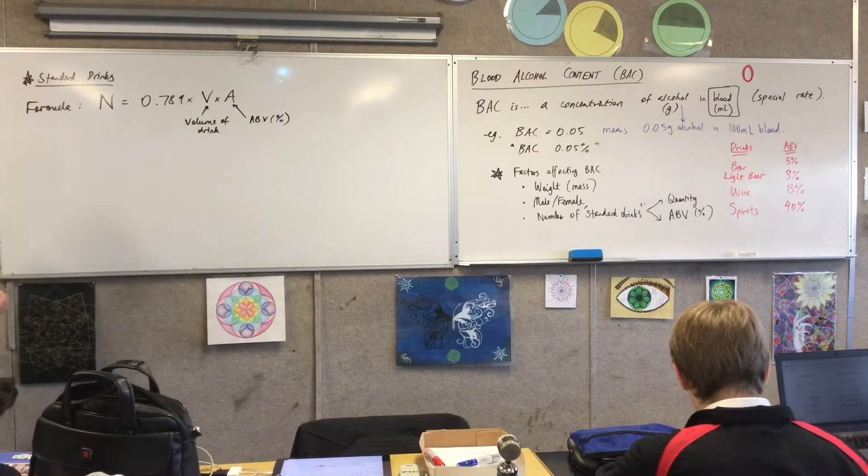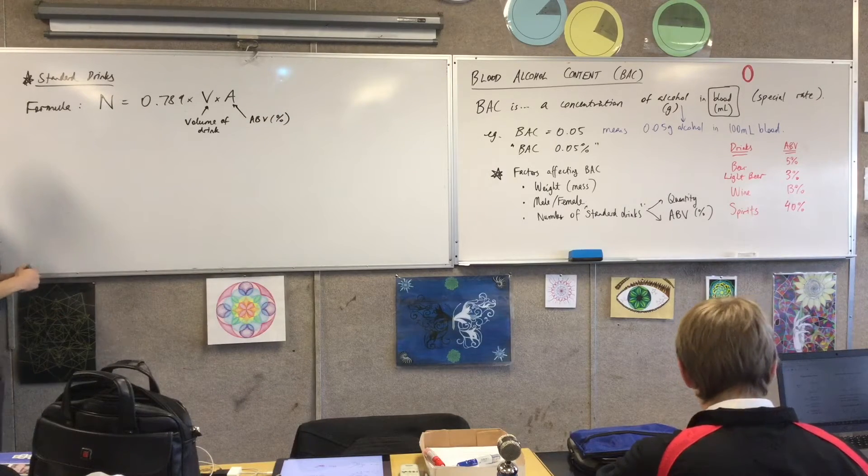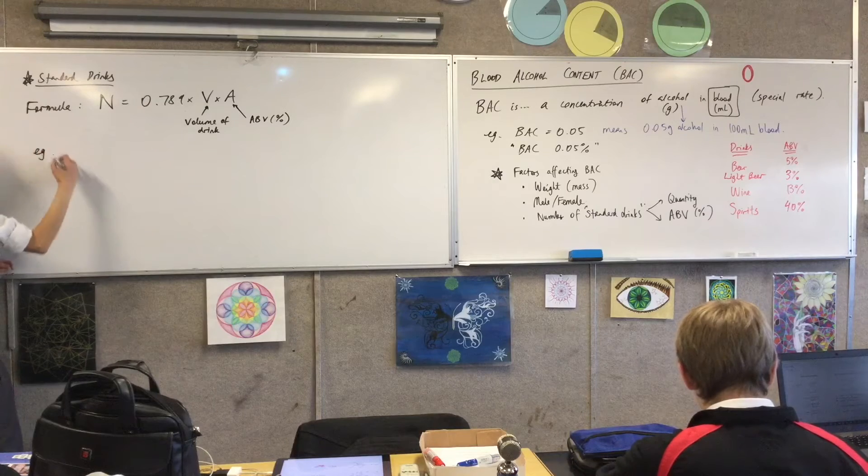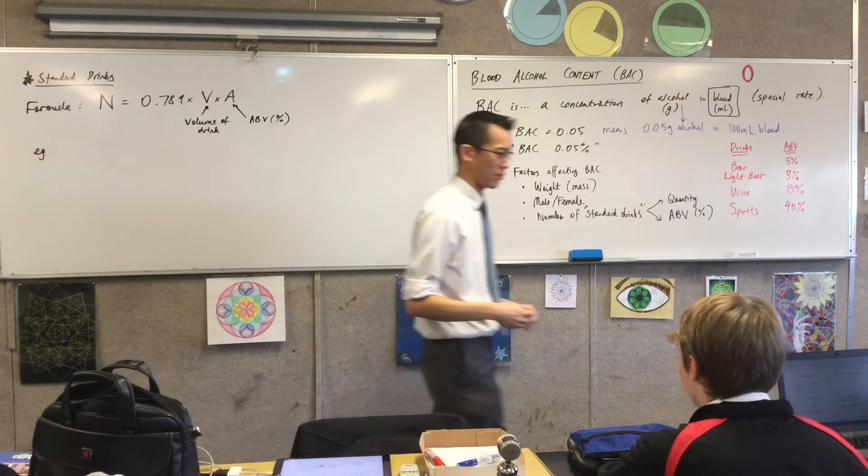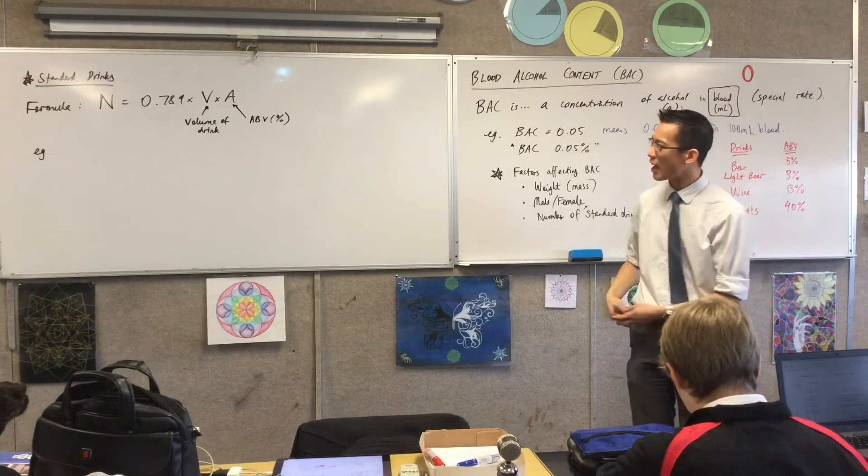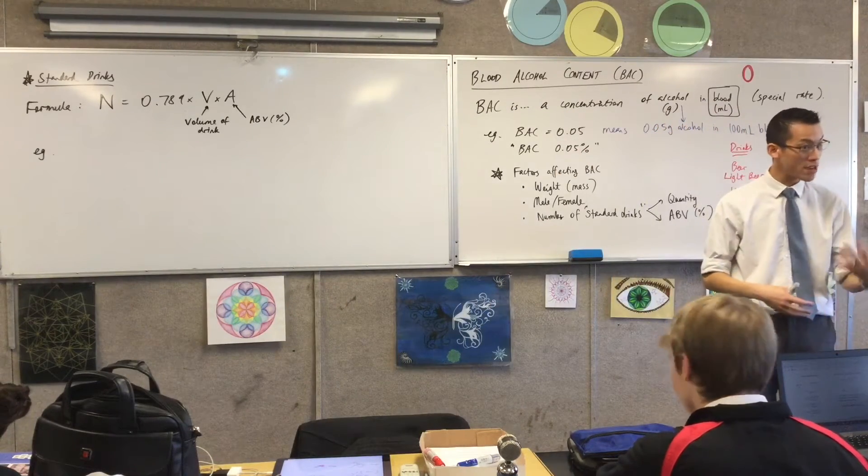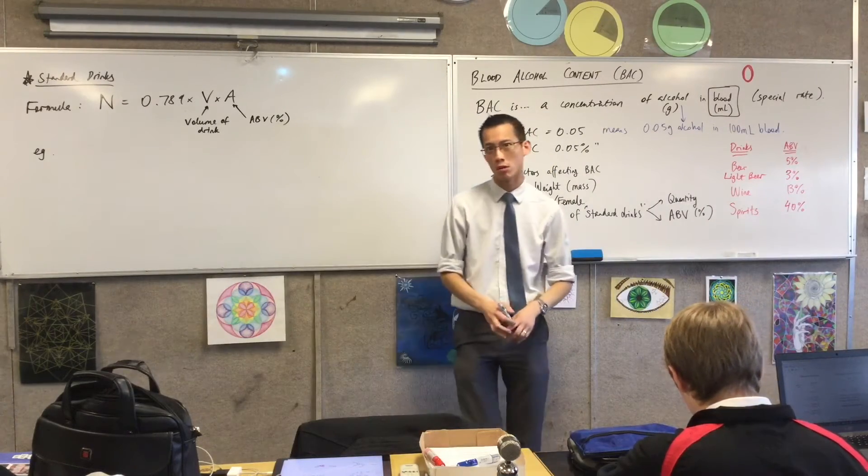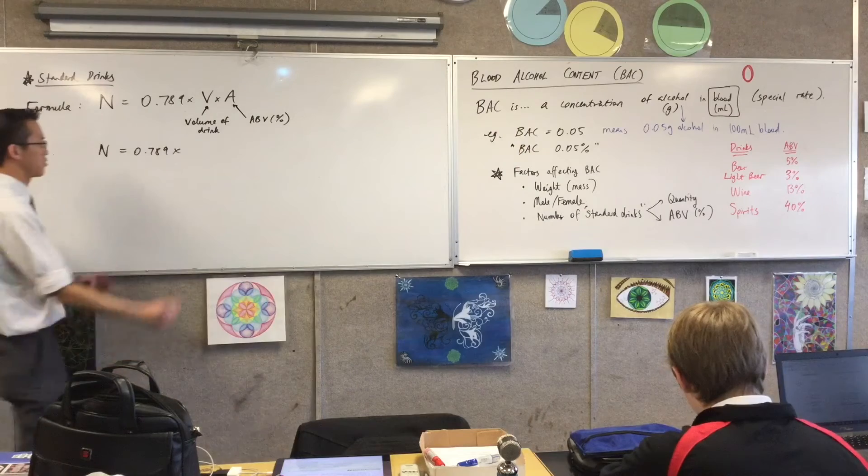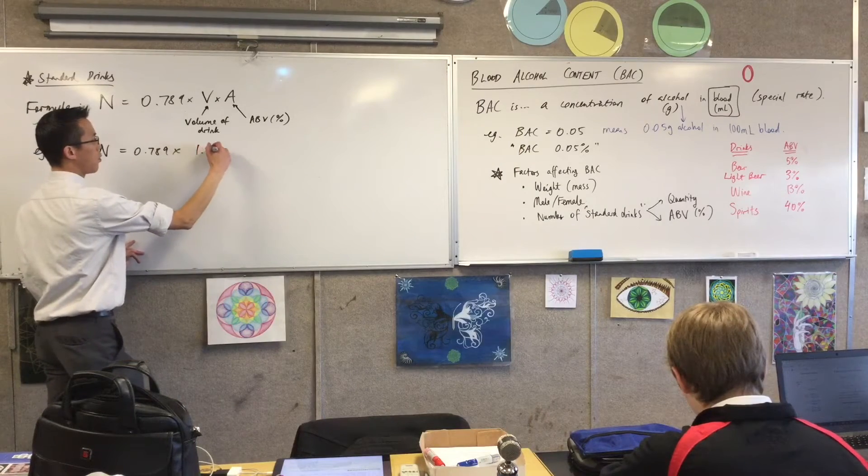Okay. So, for instance, let's suppose you've drunk, you know, a standard skin is what, 470 or something like that mils, and I've drank, say, three of those. And the alcohol content was something like, say, oh, we said 5%. Let's go 1.2.